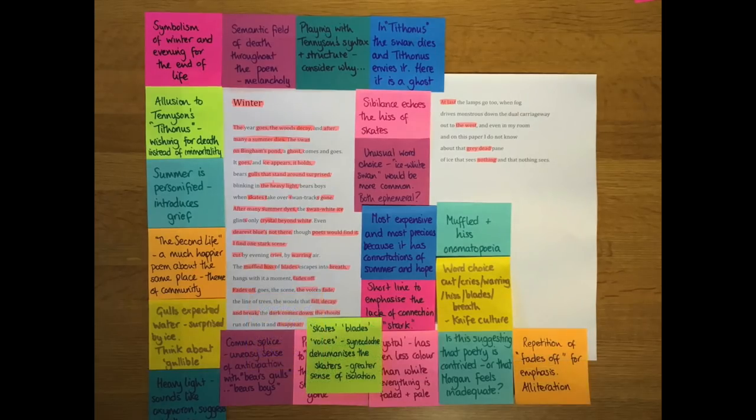I've also highlighted the fact that several times he uses skates, blades, voices and there's also shouts, as synecdoche. And he uses them to represent the skaters. So it's the voices that fade and he has shouts running off. The shouts run off into it. And I think the fact that he uses this synecdoche where the part represents the whole, he doesn't talk about the whole humanity of the skater as a person. And I think it dehumanizes the skaters. And the reason it dehumanizes the skaters is that it gives a greater sense of isolation. These are not people that he feels a connection with. They're just skates, voices and shouts.